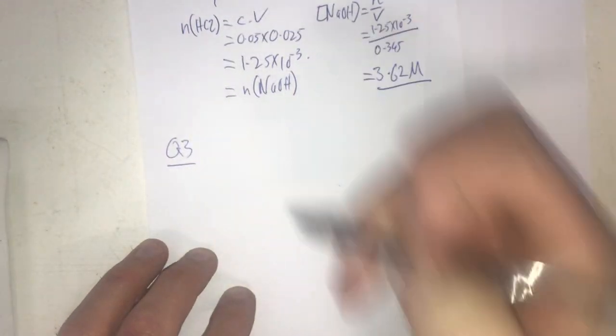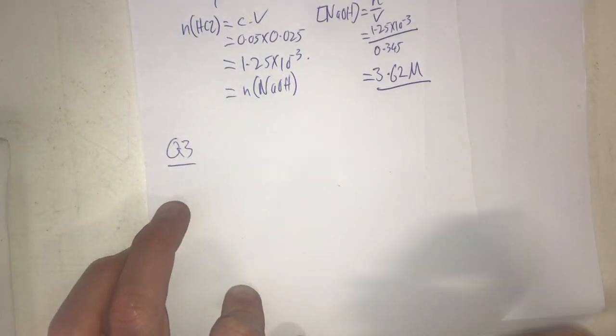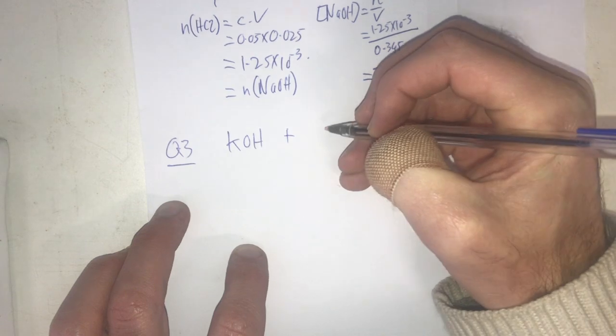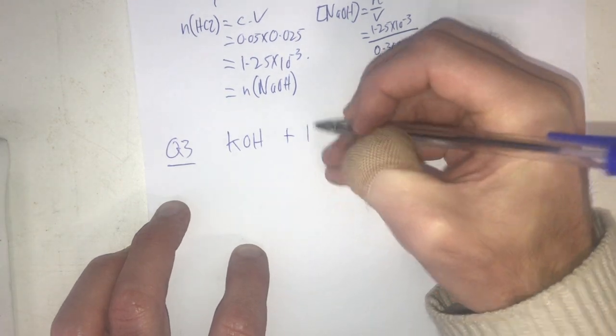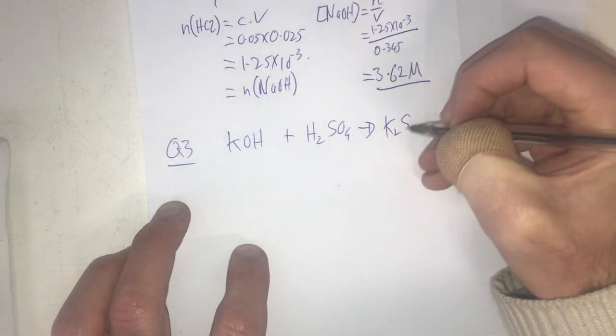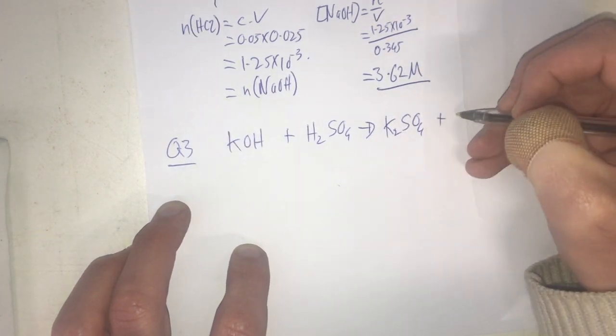Question 3 in this worksheet is, if it takes 50 ml of - oh we're neutralizing again - we're going to go with potassium hydroxide this time, reacting that with sulfuric acid. We're going to form K2SO4 as our salt and water.